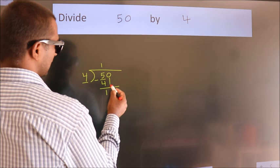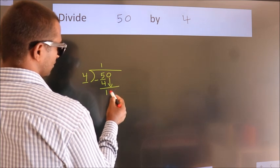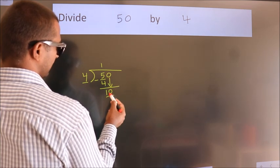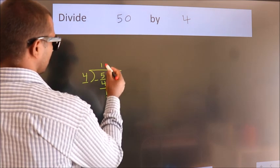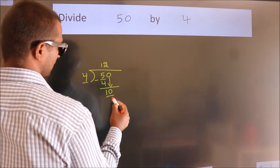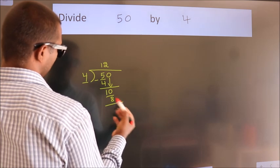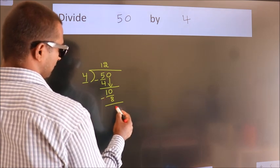After this, bring down the beside number. So 0 down, so 10. A number close to 10 in the 4 table is 4 times 2 is 8. Now we subtract. We get 2.